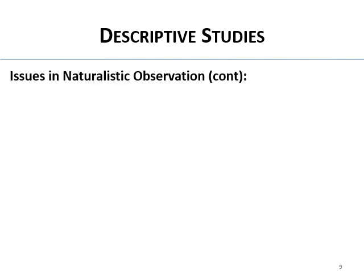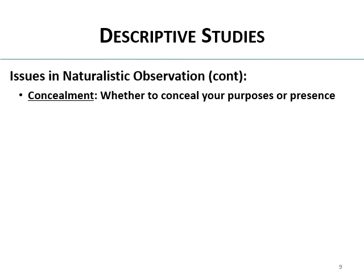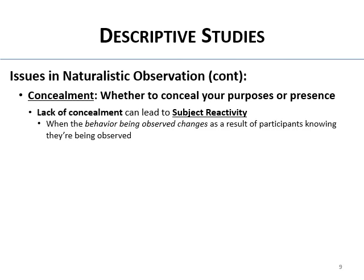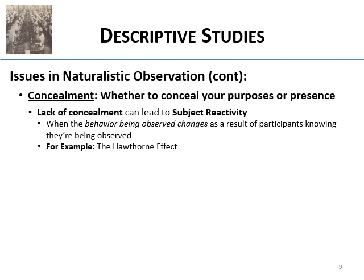Another issue for naturalistic observation is whether to conceal your purpose or presence. If you do not conceal yourself, folks know they're being observed and it can lead to subject reactivity — when the behavior you're observing actually changes because they know they're being watched. An example is the Hawthorne effect.